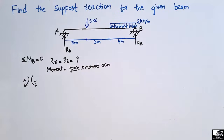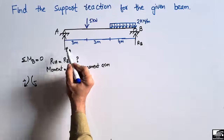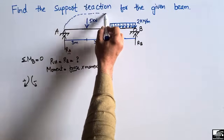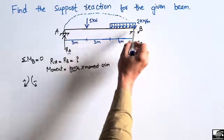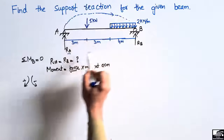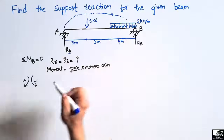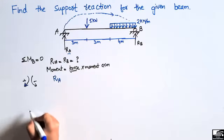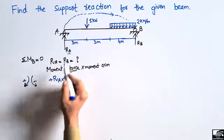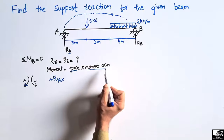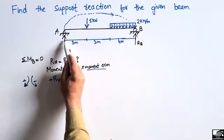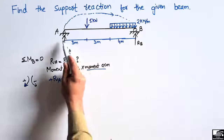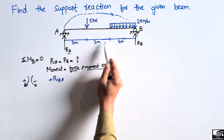Starting with RA acting upward, it creates a clockwise moment about point B, so it is taken as positive. The moment is RA multiplied by its moment arm — the total distance from support A to point B. This distance is 3 plus 3 plus 4, giving a moment arm of 10 meters. So the moment due to RA is RA × 10.